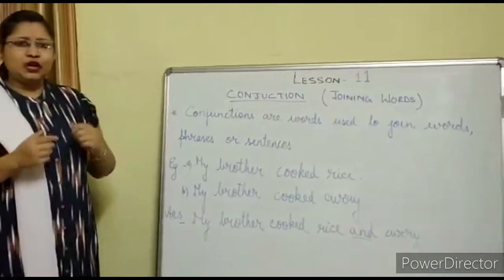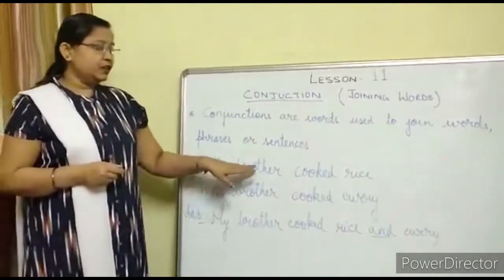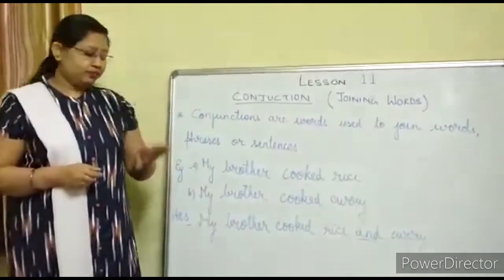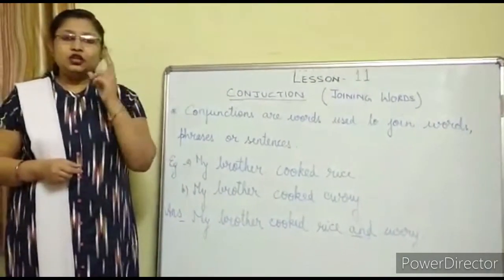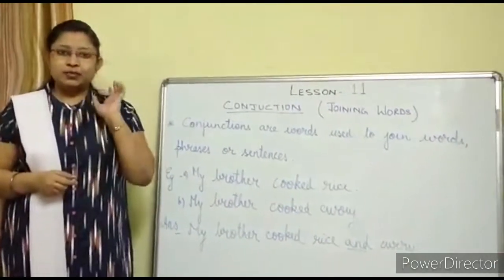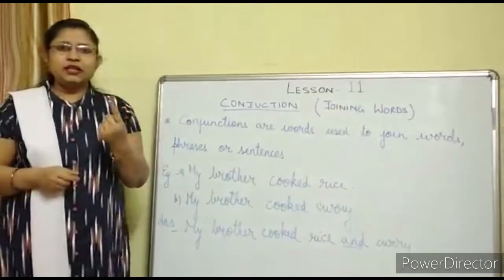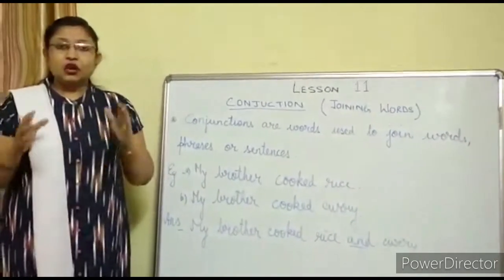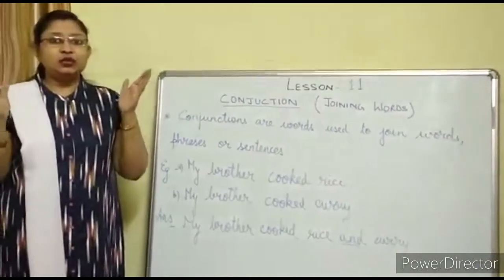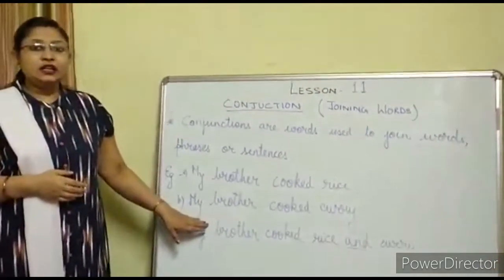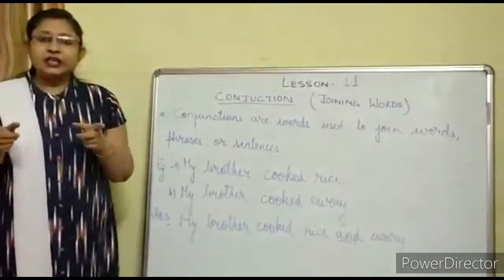Now let us take one small example. Two sentences: sentence one — 'My brother cooked rice.' Sentence two — 'My brother cooked curry.' There are two things done by my brother. So instead of writing two different sentences, we can make it one sentence using a conjunction. Here we have used the conjunction 'and,' and while using 'and,' we will avoid repeating words.